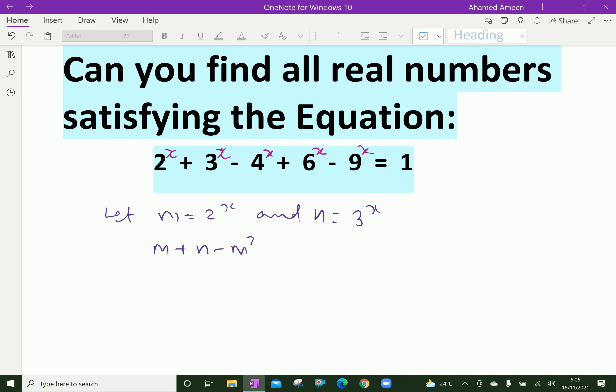Minus m squared. 6 is 2 and 3, that is mn, minus n squared equals 1. Rearranging, we have 1 + m squared + n squared minus m minus n equals minus mn.